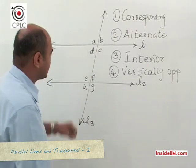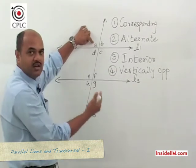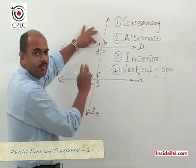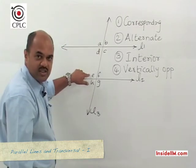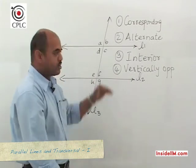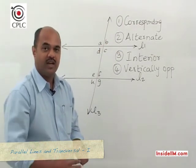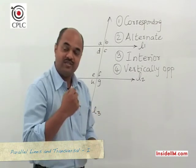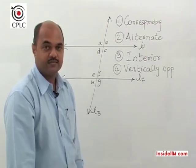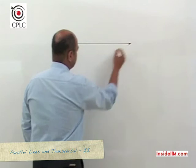We can build from here and arrive at a few more properties. For example, if we consider angles A and G, some people call these exterior alternate angles — A and G are equal to each other. We can easily prove this: A and E are equal because they are corresponding angles, and E and G are equal because they are vertically opposite, hence A and G are equal. These properties are extremely useful when solving problems related to angles.